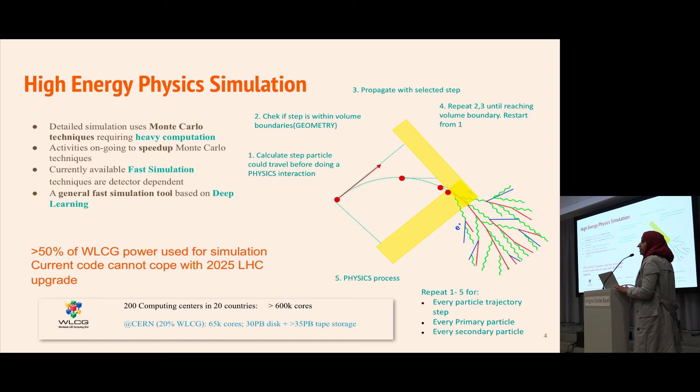At every step the distance to volume boundaries is calculated and we decide whether to propagate the particle or undergo a physics process. This process is repeated for each step in a particle's trajectory and for all primary and secondary particles.